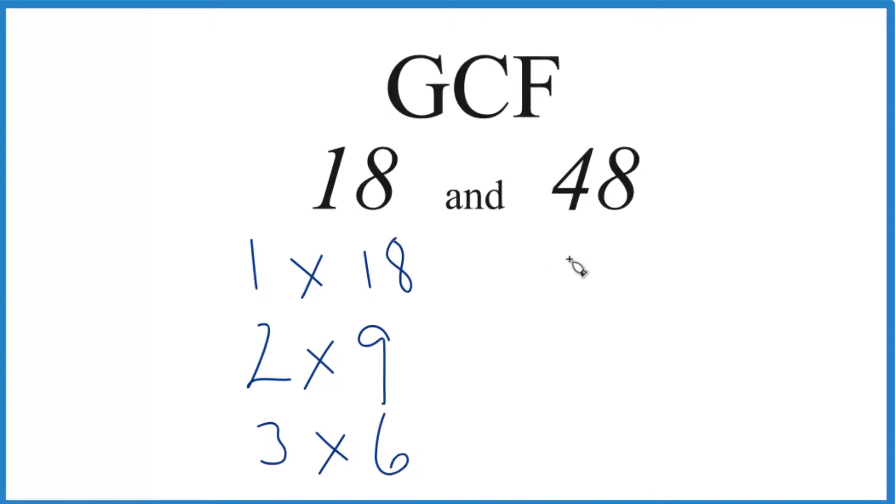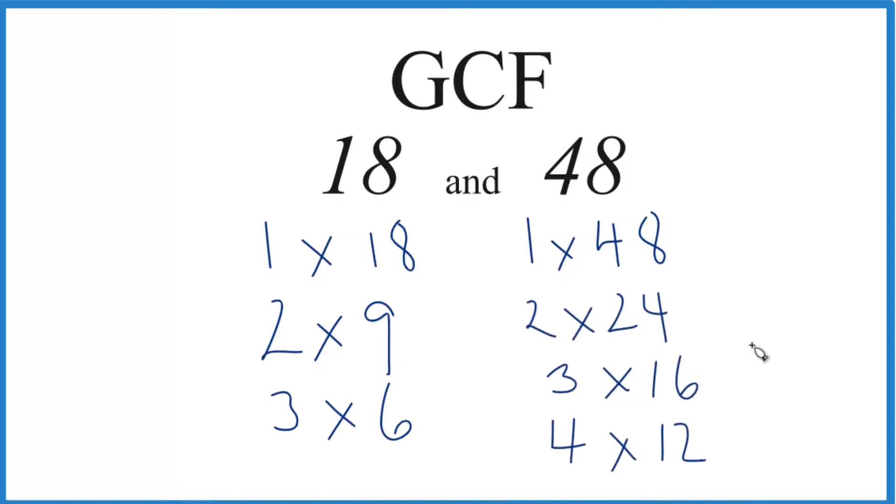For 48, we have 1 times 48, and then all these, and then 6 times 8. These are the factors for 48.